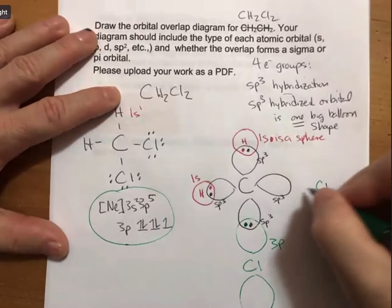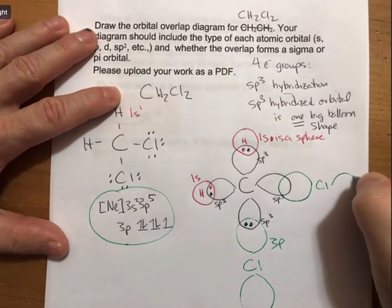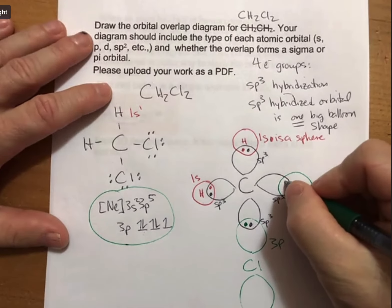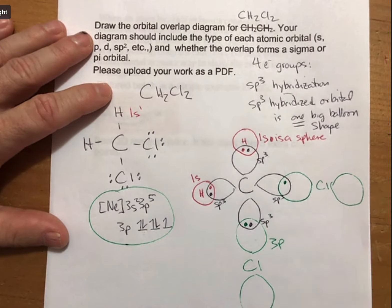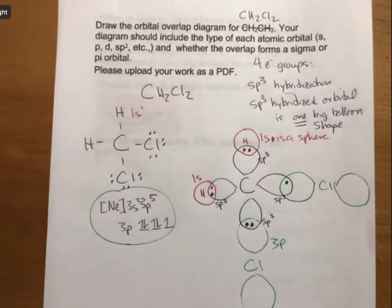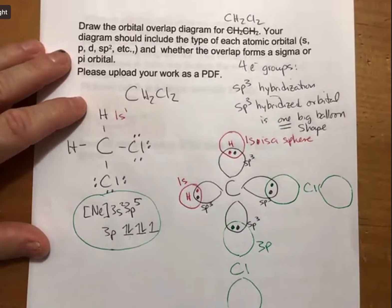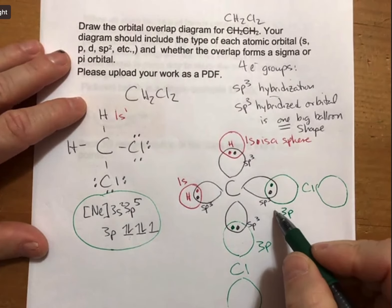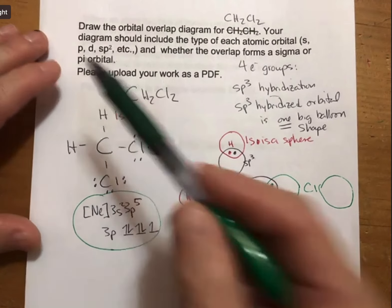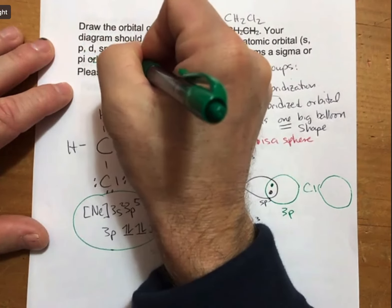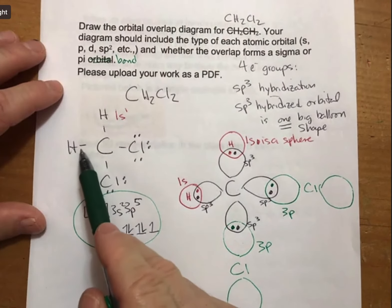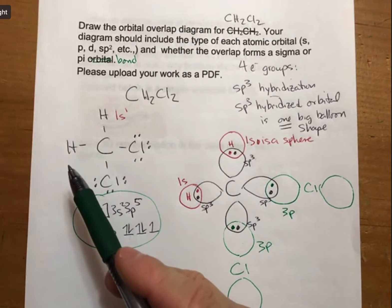One more to do here. I'm not too picky about the shapes of these, meaning how rounded or how not rounded they are. But what I am picky about is each of them has to be labeled. The last thing this says is whether the overlap forms a sigma or pi bond. Since all of these are single bonds and single bonds are sigma bonds, each of these is going to be a sigma bond.